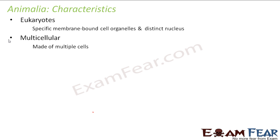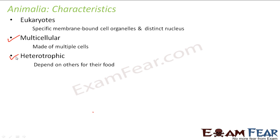The next feature is multicellular — all organisms are made up of multiple cells. Unlike unicellular organisms like bacteria, animals are all multicellular. The next characteristic is heterotrophic, meaning they depend on others for their food and cannot prepare their own food. Just as when you make biryani, the ingredients come from plants or other animals — you are dependent on them. So all animals are heterotrophic.